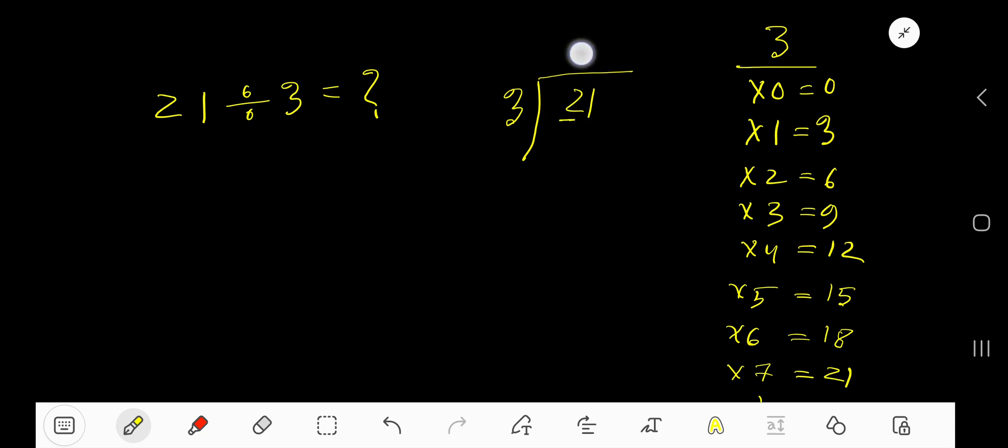3 goes into 2 how many times? 0 times, as 2 is less than 3. 0 times 3 is 0. Subtract, and you get 2 remaining.